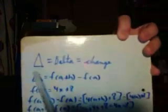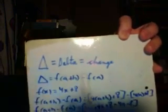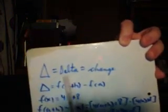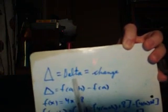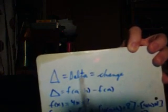Anytime you see the triangle symbol in any mathematical equation, you're going to associate that with the word delta because that's the Greek letter delta. And that literally means change.